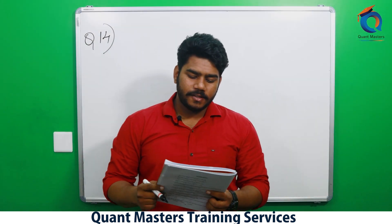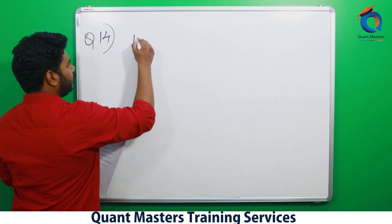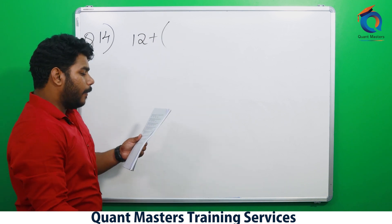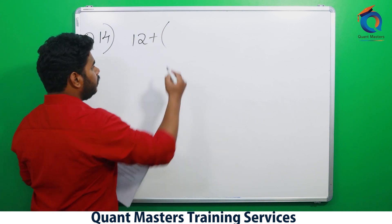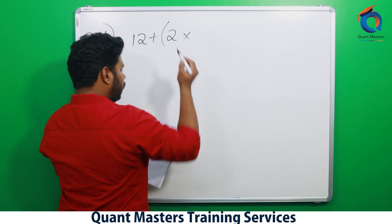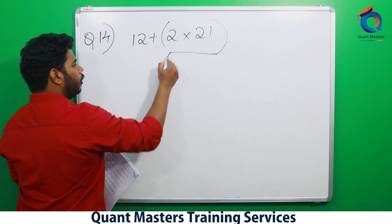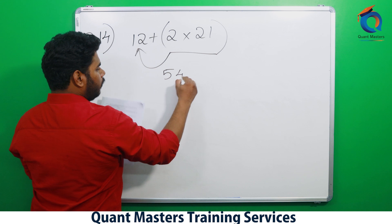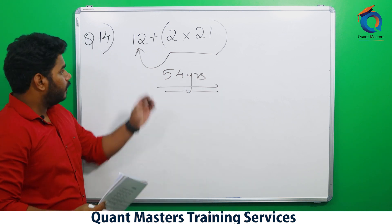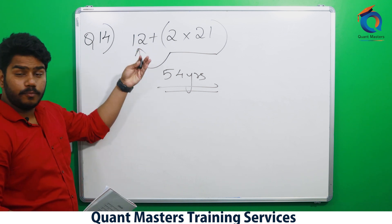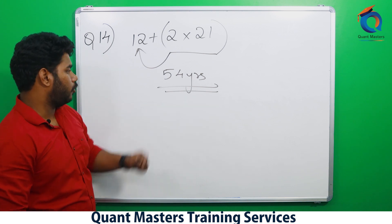Another practice problem: Average age of a class of 20 students is 12 years; when the teacher is added, the average becomes 14 years. Assume teacher is 12. The average increases by 2 years on 21 people: 2 × 21 = 42. Then 42 + 12 = 54 years. That is option D — solved in one line.